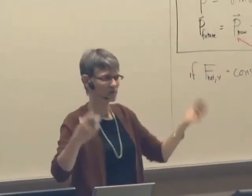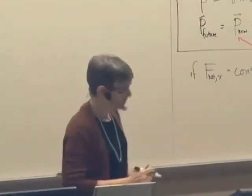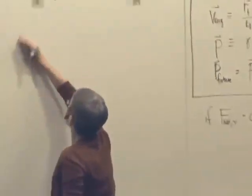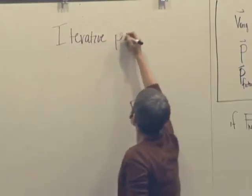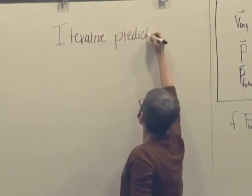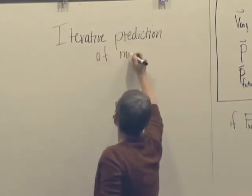So here's what we're going to do. The basic idea is called an iteration, iterative prediction of motion. Iterate just means repeat many times. So iterative prediction of motion.